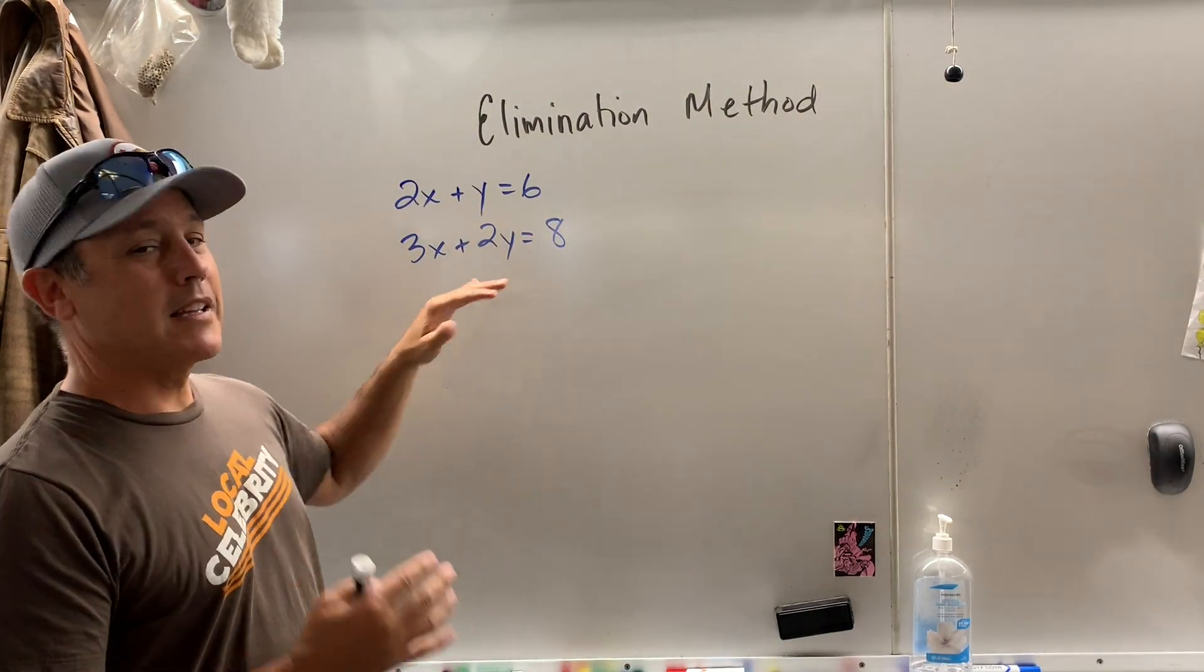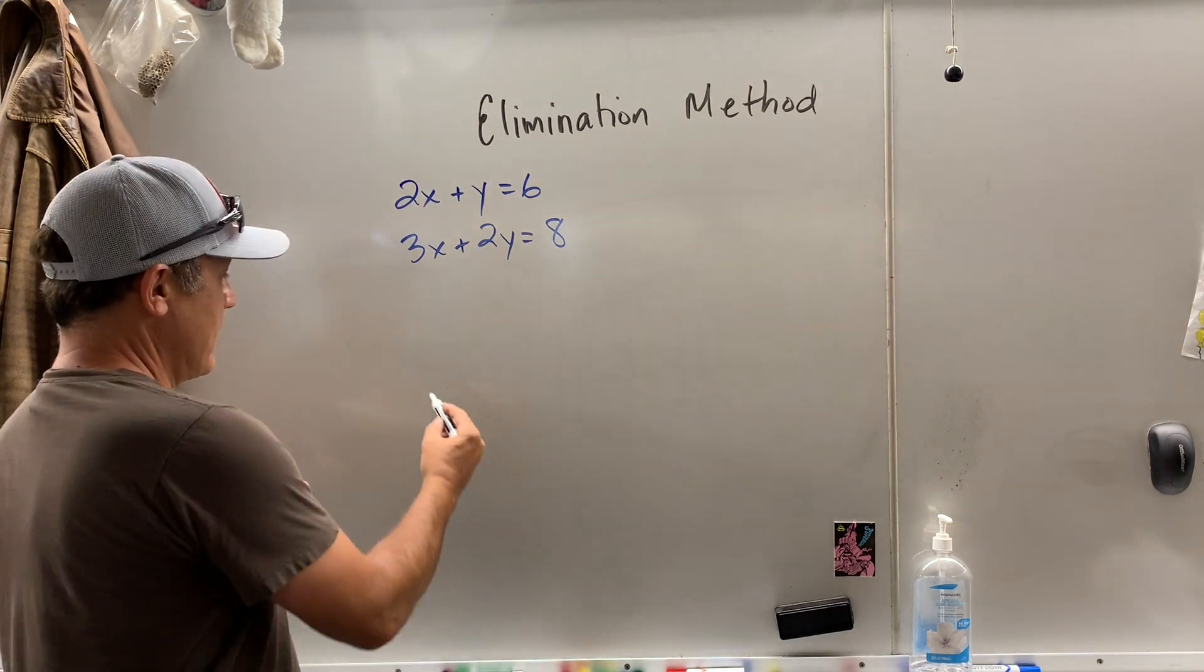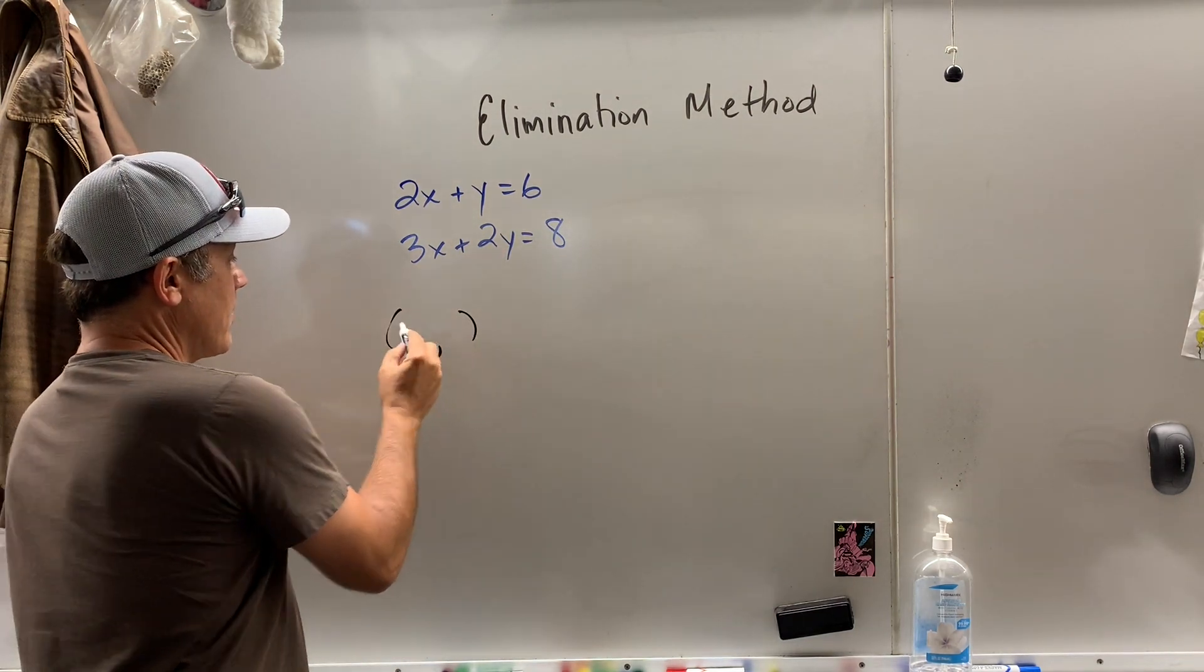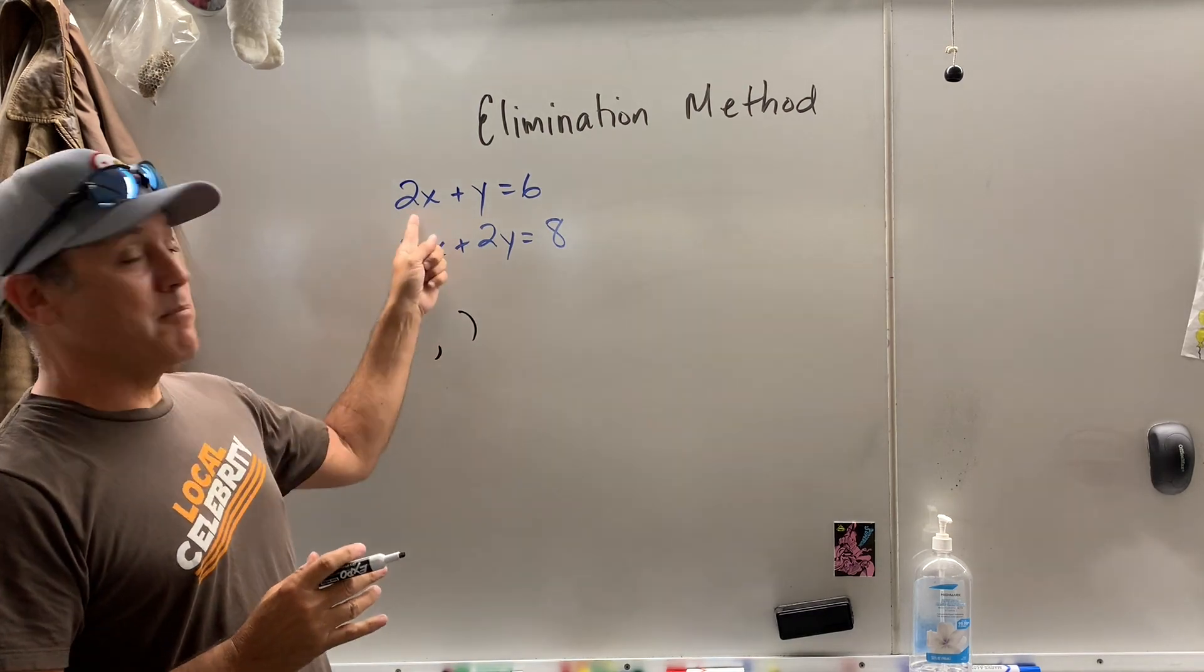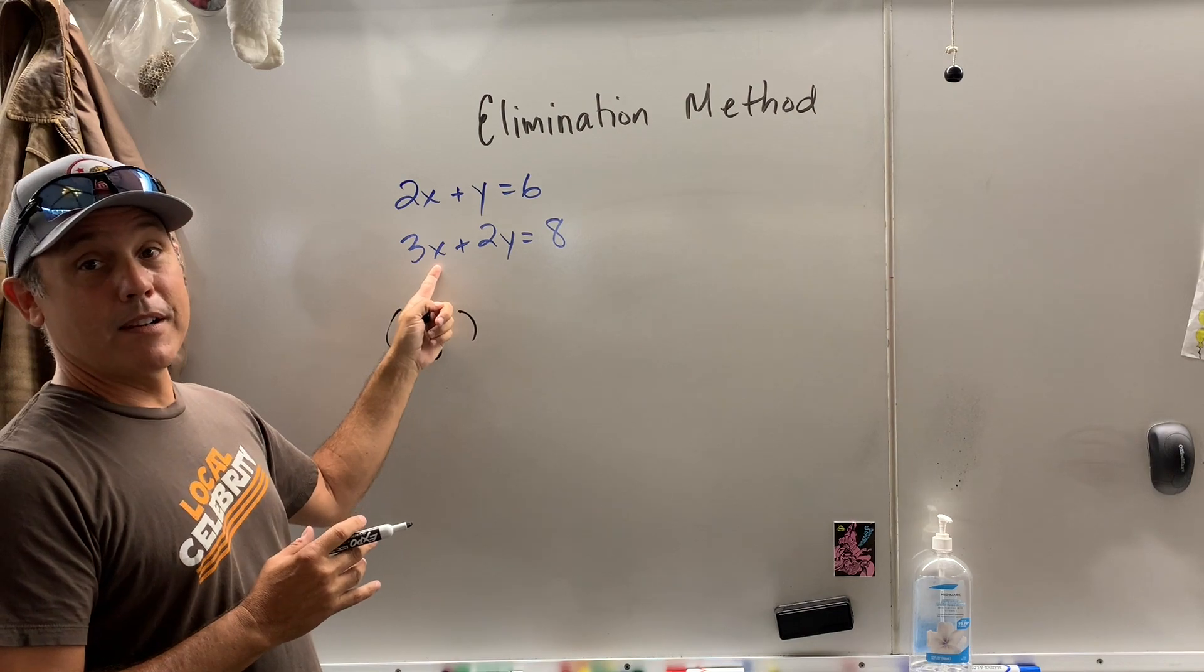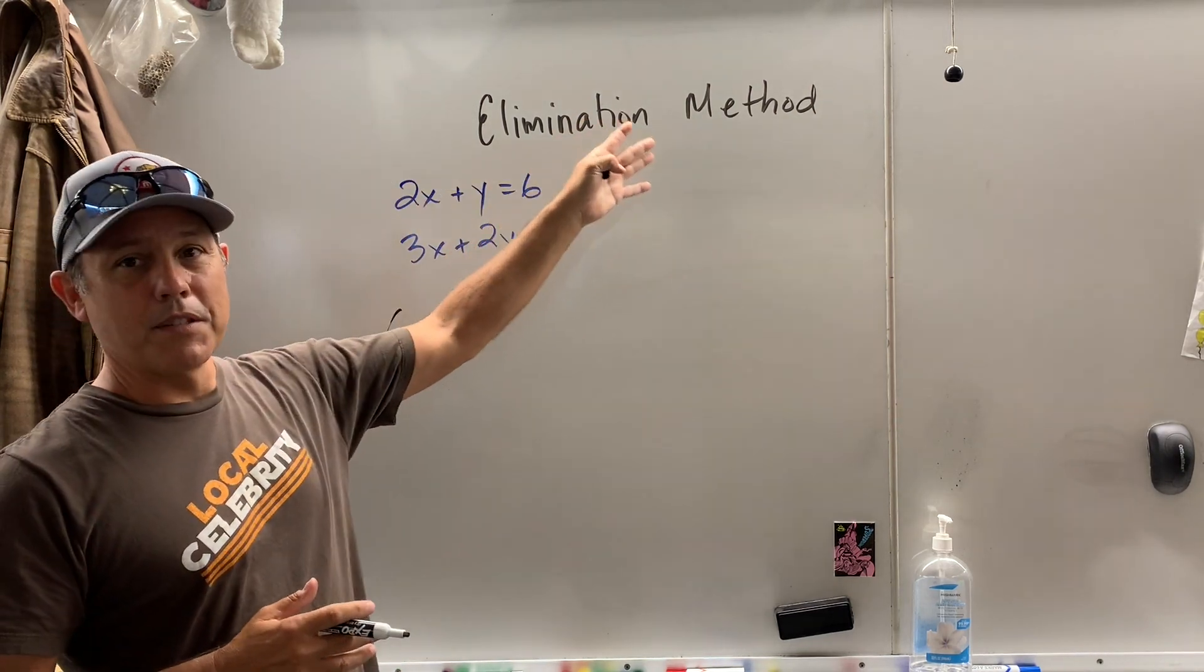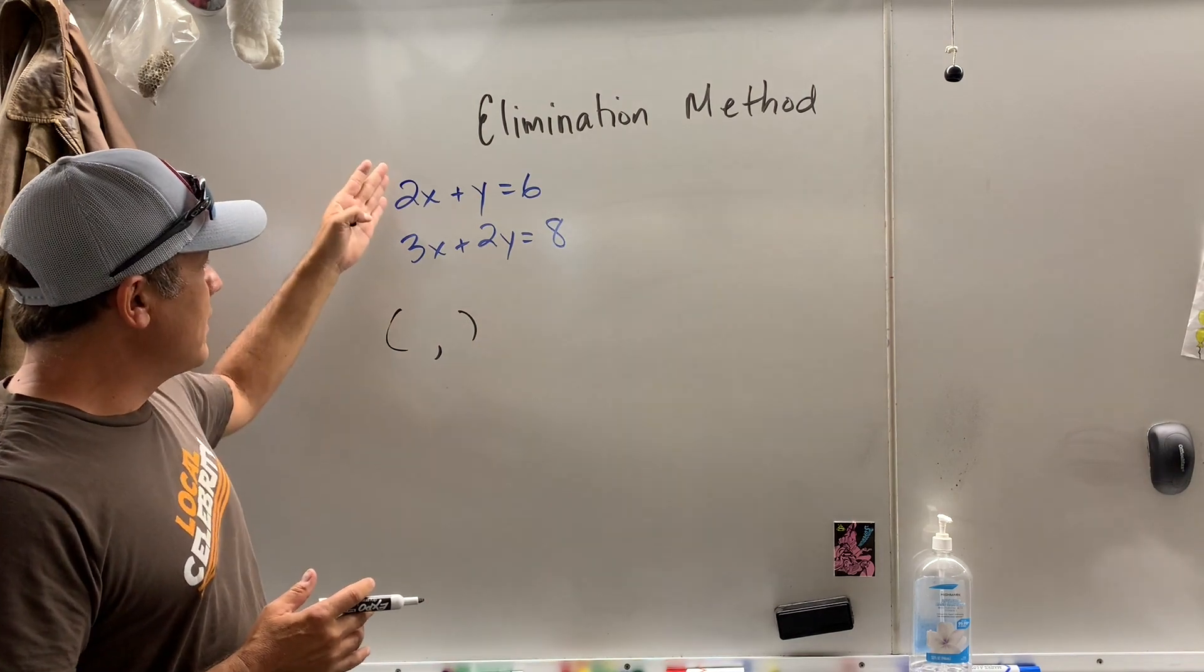What it means is we're going to try to eliminate a variable. We want to find an ordered pair. So what ordered pair can I put in here to make this equation true and also put in here the same ordered pair to make this true? Well, one method to do that is called the elimination method. We want to eliminate a variable.